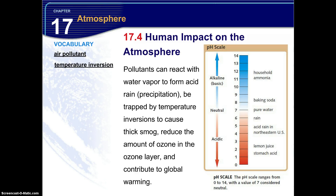Pollutants can react with water vapor to form acid rain, which can also occur as precipitation or snow. Pollutants can also be trapped by temperature inversions to cause thick smog. Additionally, pollutants can reduce the amount of ozone in the ozone layer, and they can contribute to global warming.